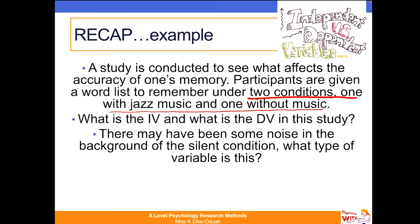What would be the dependent variable? It would be the accuracy of the person's memory afterwards. Absolutely. And taking it a step further — as top year 13 psychologists, anytime we come across variables, we must operationalise them. So if we're testing the accuracy of one's memory, we must say we're going to get a score out of 10. For jazz music, we must specify what type of jazz music and how loud it will be in each condition.